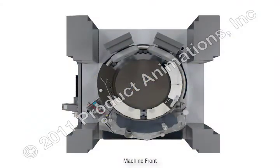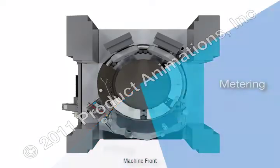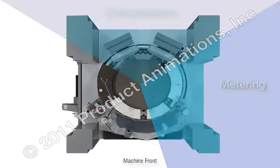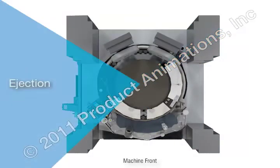The tablet making process includes four primary stages: the filling stage, the metering stage, the compression stage, and the ejection stage.